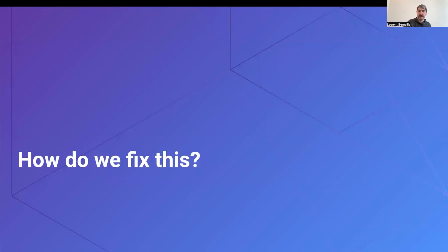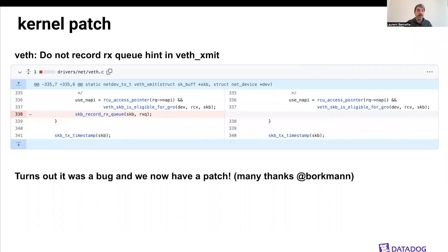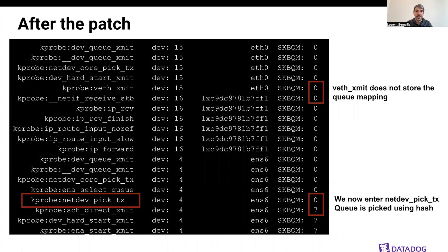So how do we fix this? We chatted with the Cilium maintainers, in particular Daniel Borkmann, who almost immediately told us this is a bug and provided a patch. The patch is pretty simple: we just stop recording the queue in BPF XMIT. We tested the patch and things now happen exactly as expected — BPF XMIT no longer records the queue, so in select_queue the queue_mapping is zero, netdev_pick_tx is called, it uses a hash function to compute the queue, and we're good.